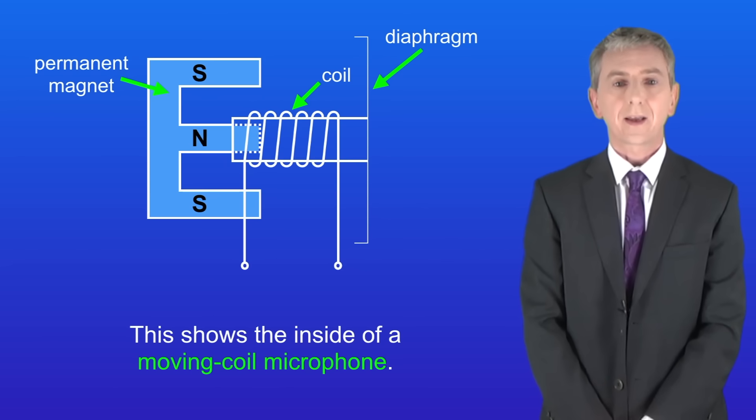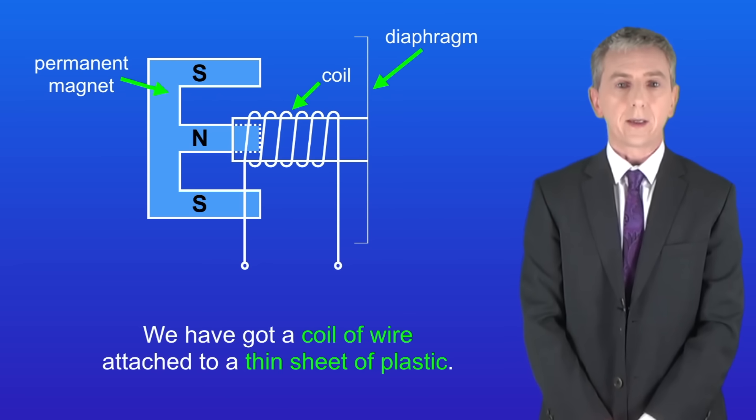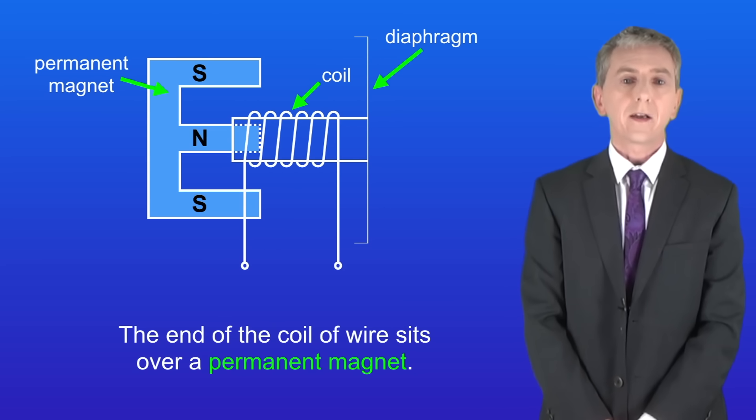I'm showing you the inside of a moving coil microphone here and you'll notice that it's very similar to a moving coil loudspeaker which we saw in an earlier video. We've got a coil of wire attached to a thin sheet of plastic. Scientists call this sheet of plastic a diaphragm. The end of the coil of wire sits over a permanent magnet.